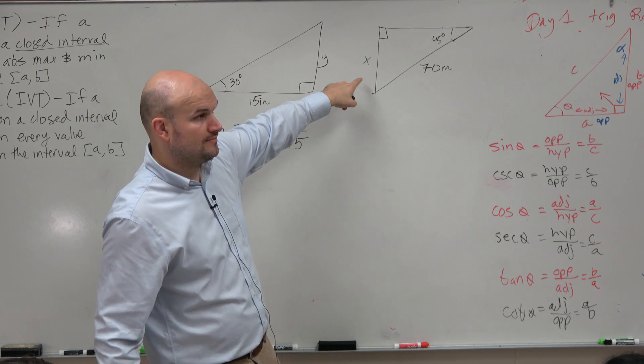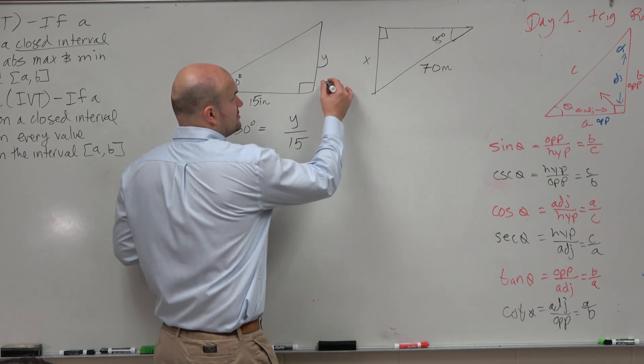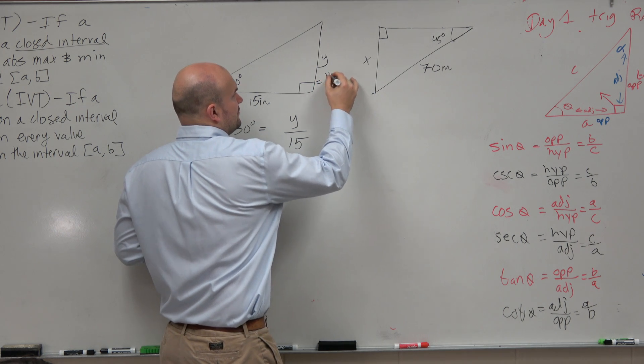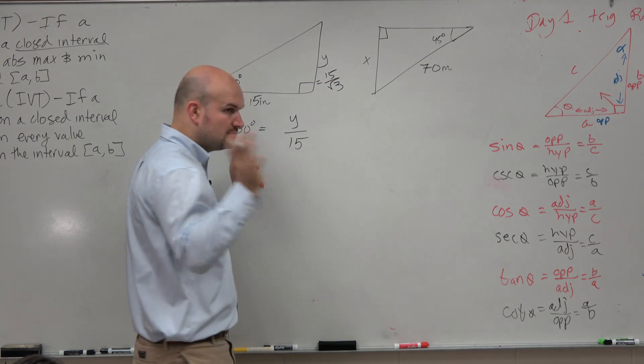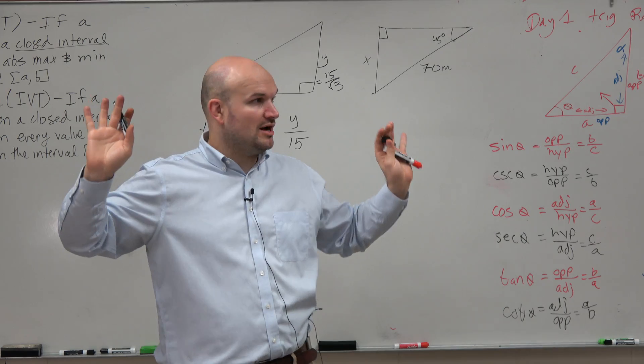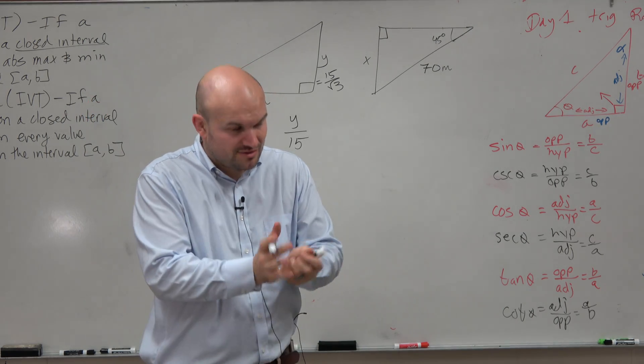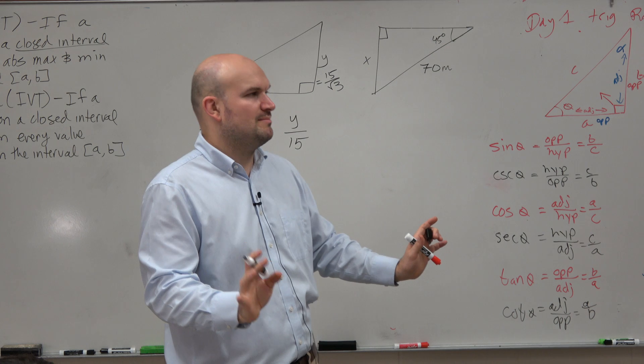To divide by what? Radical 3, right? So I could say 15 divided by radical 3, right? And then simplify, and then I'd be done. But most of us do not remember our special right triangles, so that's OK. I'm not going to expect you guys to memorize them.